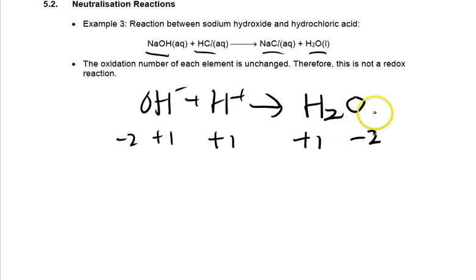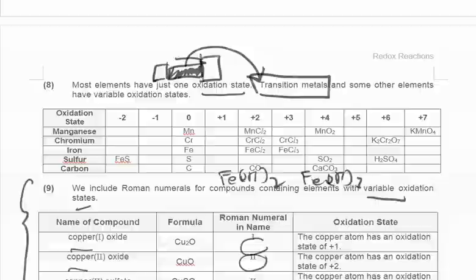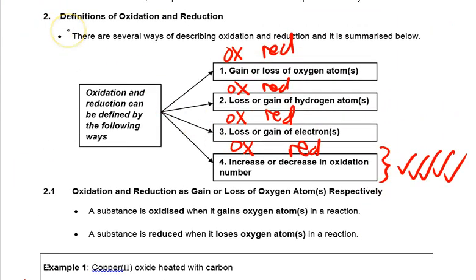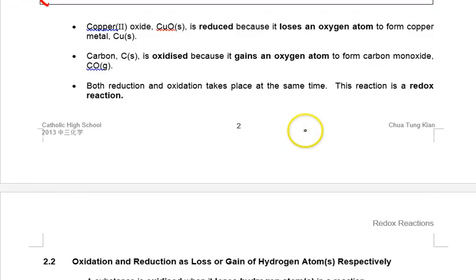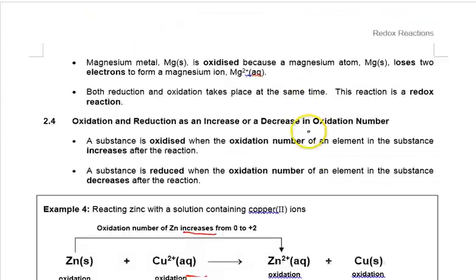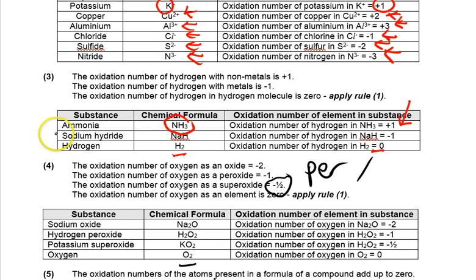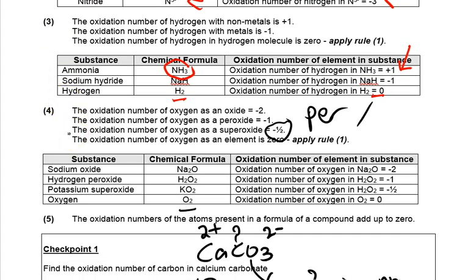We have come to the end of the redox topic. Review the summary of what defines oxidation and reduction, and remember the key rules: elements are assigned 0; simple ions follow the charge; hydrogen is plus 1 with non-metals and minus 1 with metals; and oxygen is typically minus 2. These rules will help you solve redox reaction questions. Thank you very much.